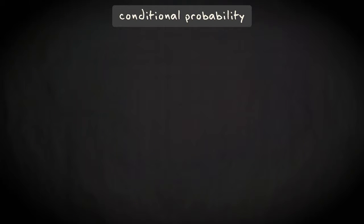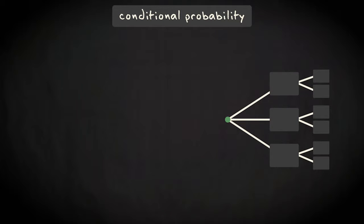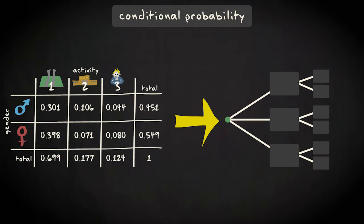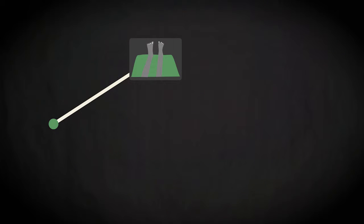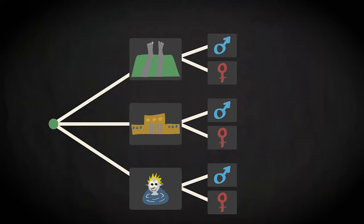Sometimes you deal with conditional probabilities without really noticing. You may have done so already while making calculations with the tree diagram. Let's turn the table with joint and marginal probabilities into a tree diagram. You can imagine that at the beach you would first look at all the people resting and subsequently count the number of male and female persons in that group, and the same for the other two activities. So your tree would have a first split over activity and a second split over gender within each activity branch.